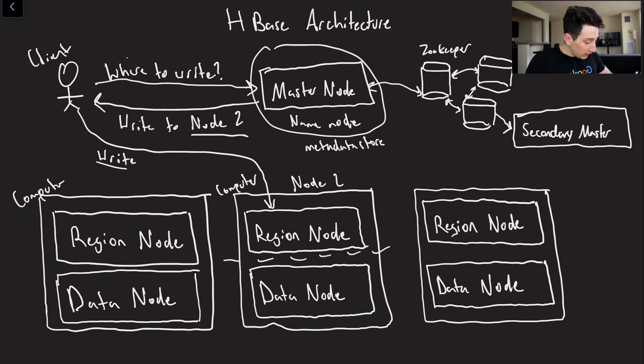So the data node is actually a term that we've discussed in our Hadoop video, and the region node is HBase. The region node is going to be a separate process from HDFS running in memory, likely on the same computer as the data node.